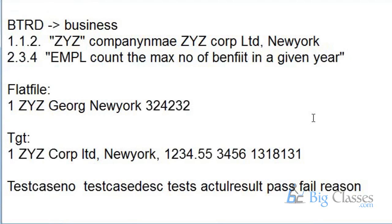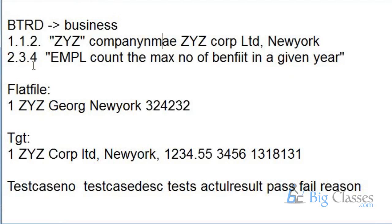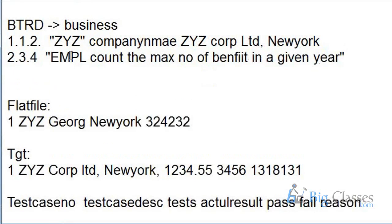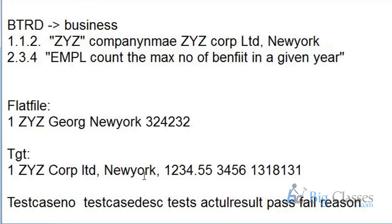When writing an email to business, make sure you include full details so they don't need to re-read the BTRD document. The subject should be precise: 'BTRD 2.3.4 clarification required.' In the email, say: 'Hi Josh, I have a clarification required on BTRD requirement 2.3.4. Can you please clarify further?' You can explain what you understand and they will reply confirming what you should be checking in the target table. Based on those clarifications, you validate your test cases.